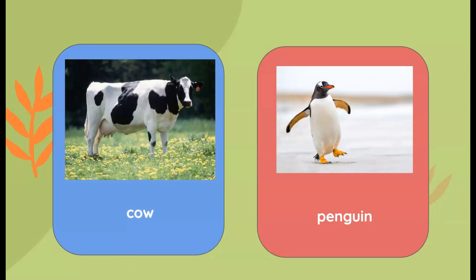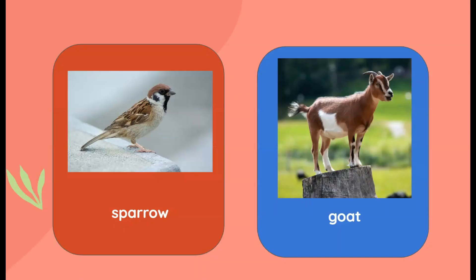Penguin is a bird — it doesn't have hair. Penguins have feathers on their body. Which one is the mammal here — is it the sparrow or the goat?